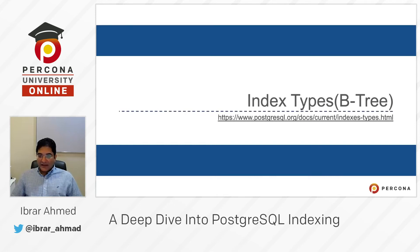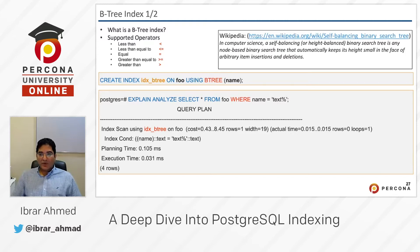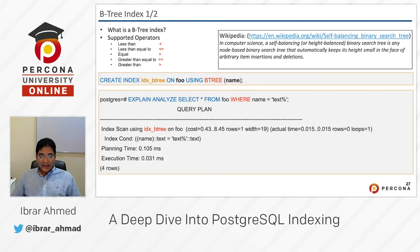Our next topic is types of indexes. The first one is the B-tree index. We are not discussing the B-tree data structure here — if you want to learn about B-tree, go to Wikipedia or Google it. Here we'll discuss what is a B-tree index within PostgreSQL. The supported operators for B-tree index are: less than, less than or equal to, equal to, greater than or equal to, and greater than — so it covers almost all your needs.